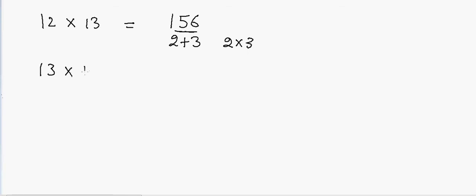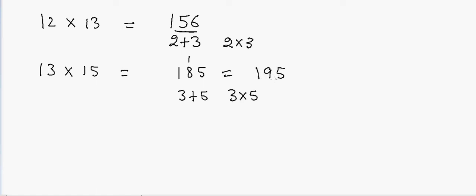Again, if I have 13 and want to multiply by 15, then it will be equal to 3 plus 5, that is 8, so we'll write an 8 here, and 3 into 5 which is 15. So I have 5, 1, and 1, and that will give me 195. Again, if I have 11 and I want to multiply by 14, that will be equal to 1 plus 4, which is 5, and 1 into 4, that's equal to 4.